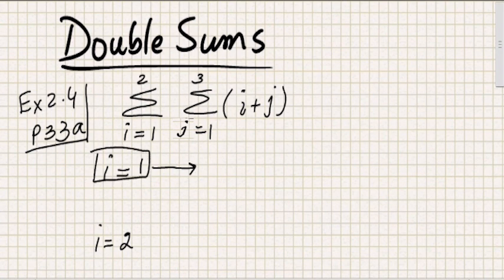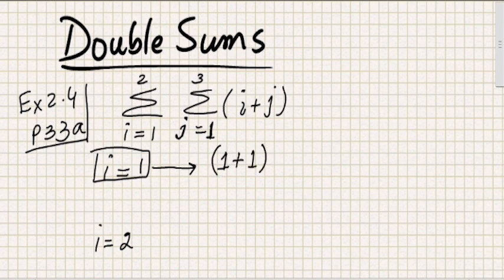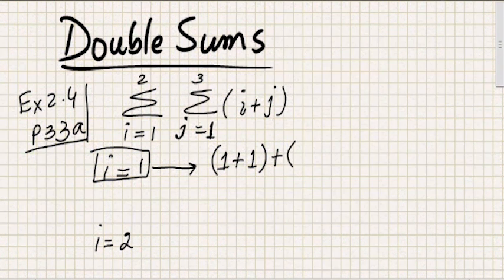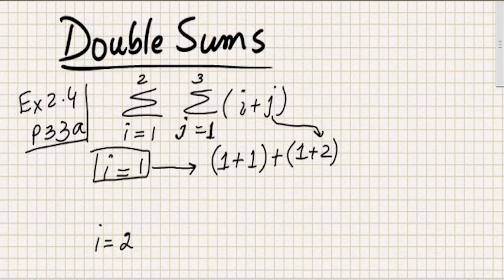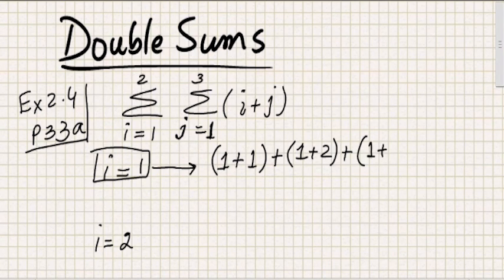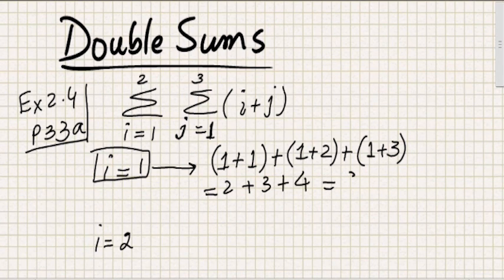For fixing i at 1, we iterate j going from 1 up to 3. For i=1 and j=1, that's the first iteration. This is added to the next term with i=1 and j=2, and then i is still fixed at 1 while j obtains its last value of 3. So we calculate 2 plus 3 plus 4, which equals 9.